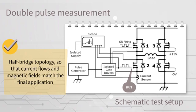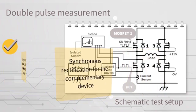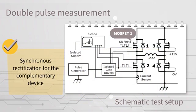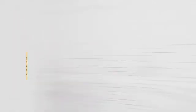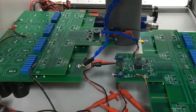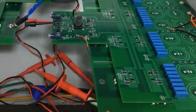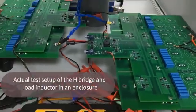Here, in this schematic, MOSFET 2 is the device under test. This also requires synchronous rectification firing pulses for MOSFET 1. Keep in mind that measuring voltages on the upper devices requires high-performance isolated differential probes. This is the actual test setup of the H-bridge and load inductor in an enclosure for safety.